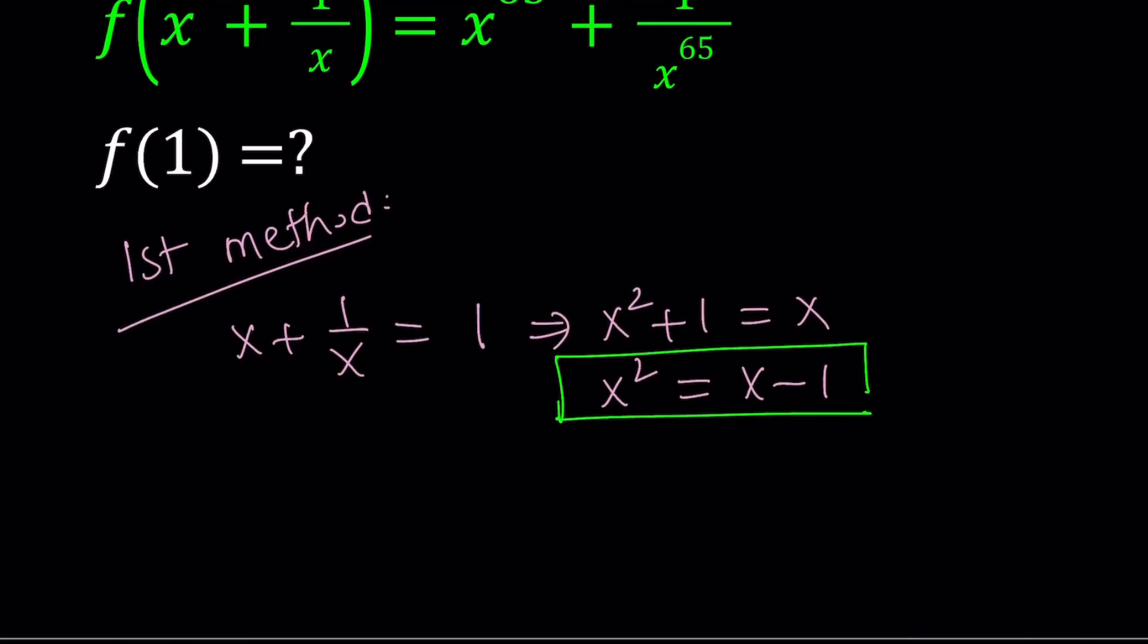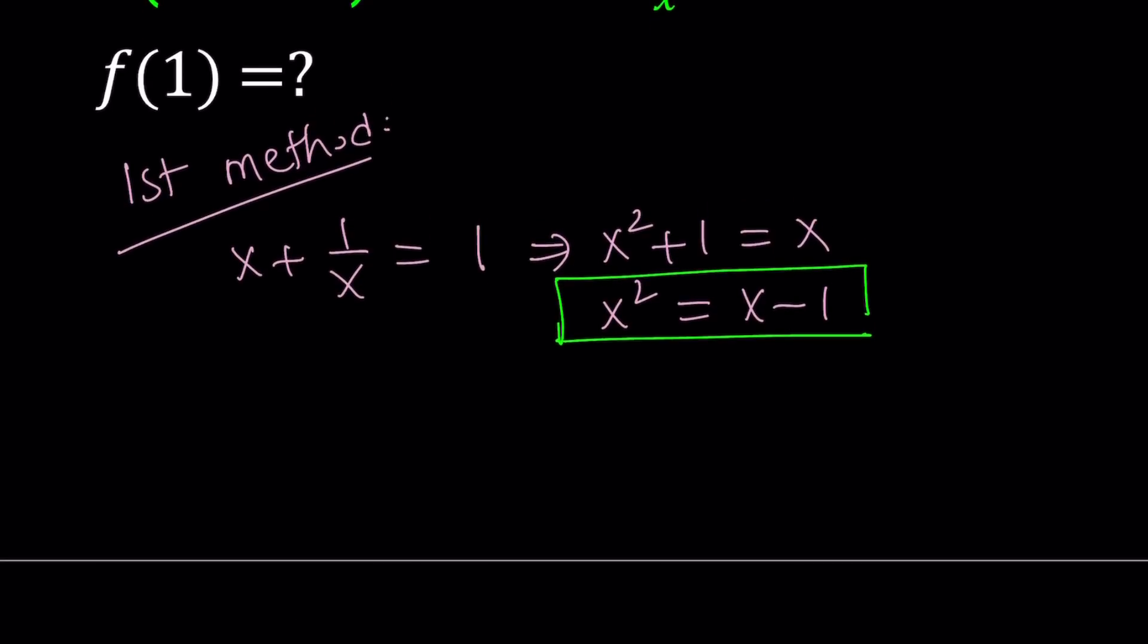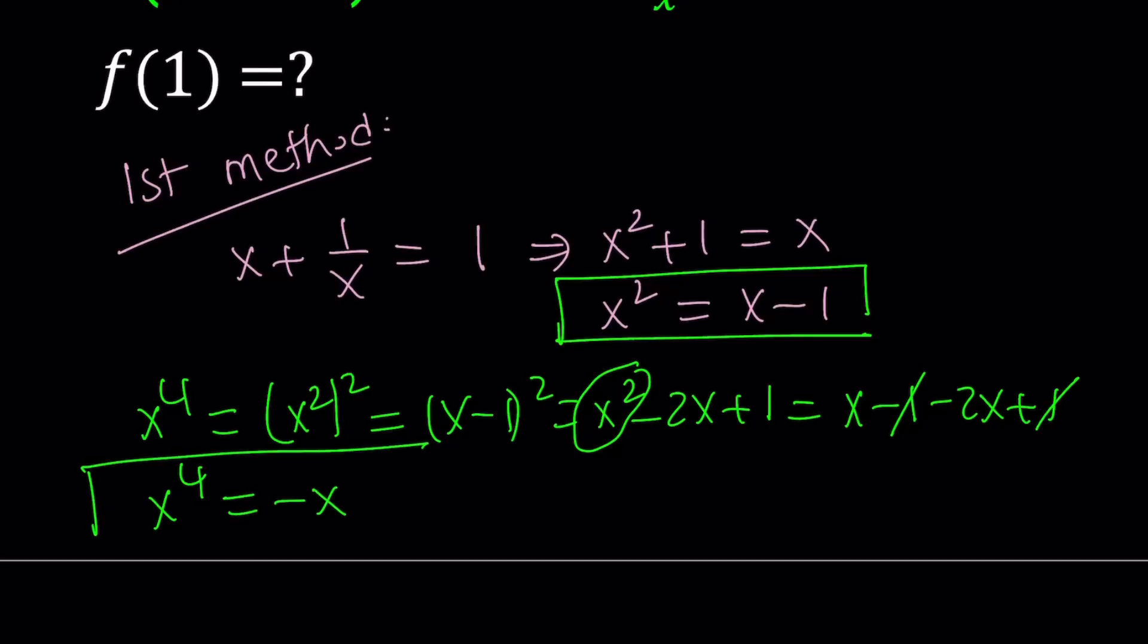So I want to get to the 65th power, and I notice that it's 1 more than a power of 2, which is x to the power of 64. So here's what I'm going to do. I'm going to evaluate x to the 4th by squaring x squared. And since x squared is x minus 1, that's going to give me x squared minus 2x plus 1. But now I can always replace x squared with x minus 1. That's going to give me x minus 1 minus 2x plus 1. And when I cancel out the 1s, it's going to give me negative x.